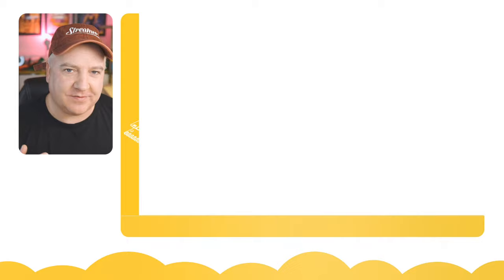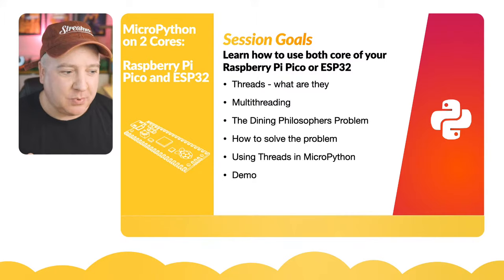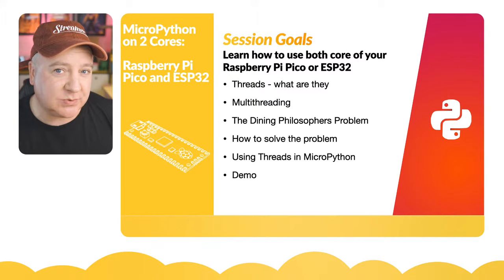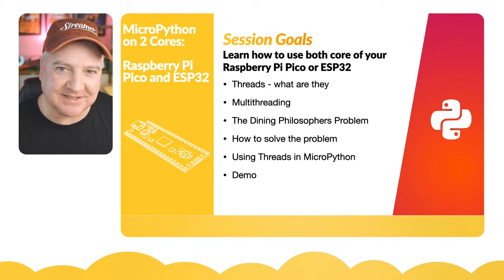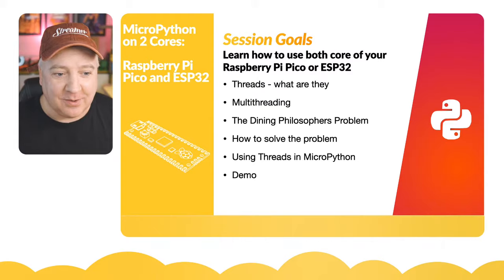Let's have a look at what this is all about. The session goals for today: let's learn how to use both cores on our Raspberry Pi Pico and ESP32 - there are slight differences between the two. We'll look at threads, what they are, multi-threading, the dining philosophers problem - a cool computer science thought experiment - how to solve that using threads in MicroPython, and a demo on real hardware.